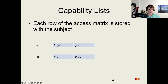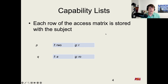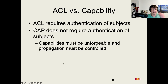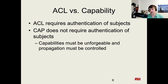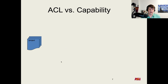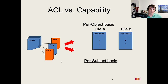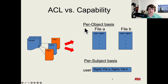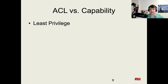Another consideration is propagation. A capability list is essentially a blob that P can just give to Q, and now Q is acting as if it's P. That may be something you want or something you don't want. This actually relates to modern web token authentication, where different services use capability-list-style tokens. To summarize: access control lists operate on a per-object basis — a file holds the rights for all users — while capability lists operate on a per-subject basis.